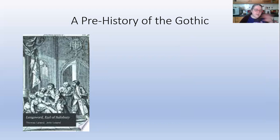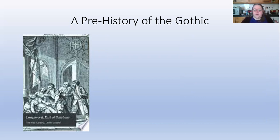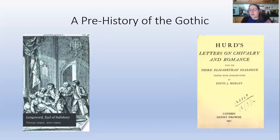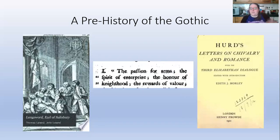Longsword also indicates the way the 18th century was becoming interested in the creation of the historical novel. We are often told the historical novel started with Walter Scott, but it didn't — it had many precursors. More broadly in this period there's a re-evaluation of the medieval, and a really key text is Richard Hurd's Letters on Chivalry and Romance from 1762, which talks about chivalric codes and resuscitates them. Gothic and the medieval no longer simply mean an age of superstition and darkness, but are connected to ideas of chivalry, the passion for arms, the spirit of enterprise, and the honour of knighthood.